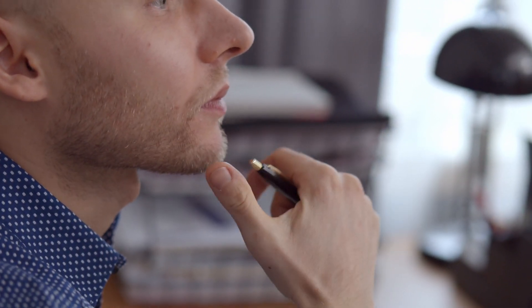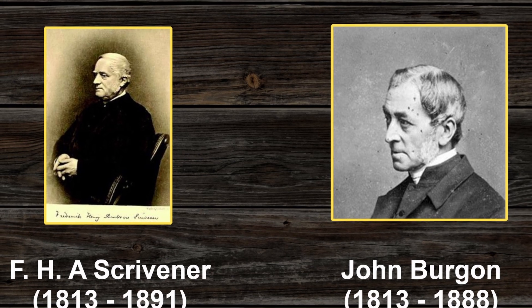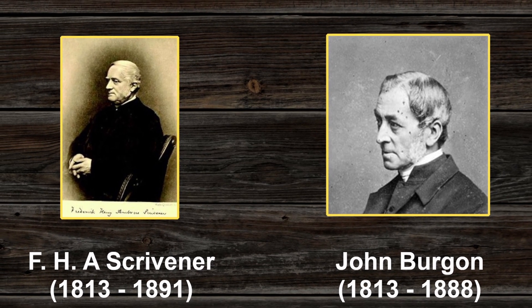I started meeting off and on with Kenneth Clark for a period that lasted over seven years. During that period, Clark is the one that influenced me toward the Byzantine text. He said, do you ever ask questions about reasoned eclecticism — its presuppositions, its theory, and its methodology? And I said, no, I just thought this was what everybody held. And he said, well, I suggest you start asking questions. He suggested I should read the opposing side — basically Burgon, Scrivener, and various others from the 19th century.